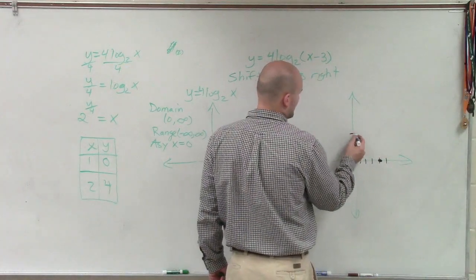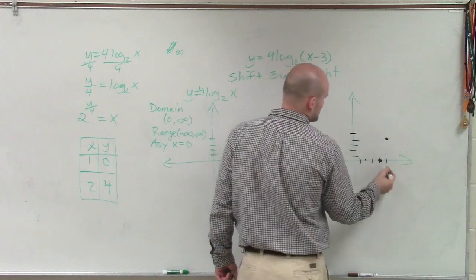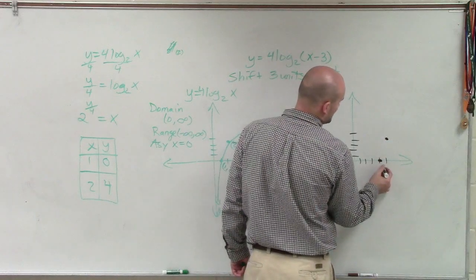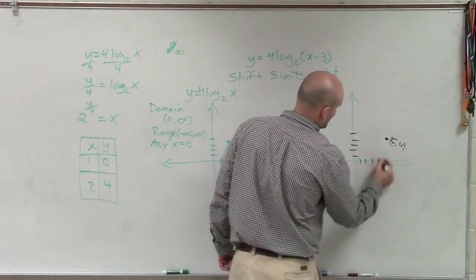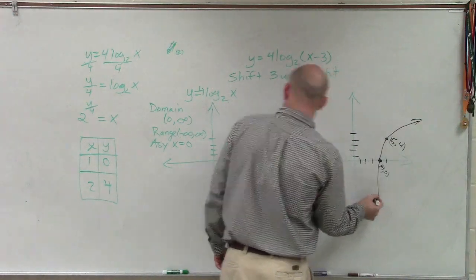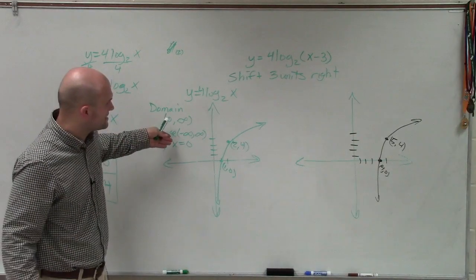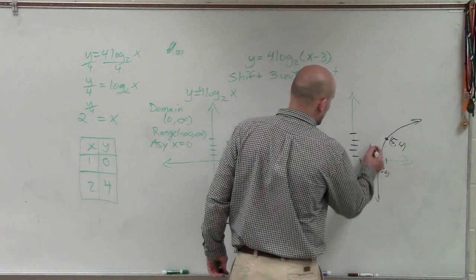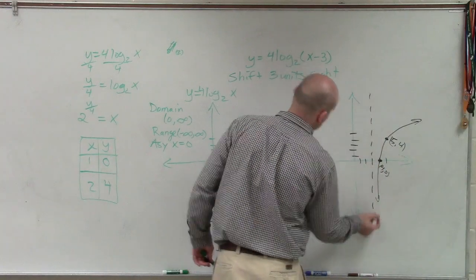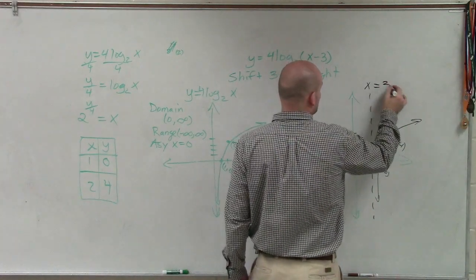So I have 4 comma 0, and now 5 comma 4. Then I go ahead and graph these. And the other thing is, remember, my asymptote was originally at x equals 0. But now if I shift that over three units, I'm now going to have a new asymptote at x equals 3.